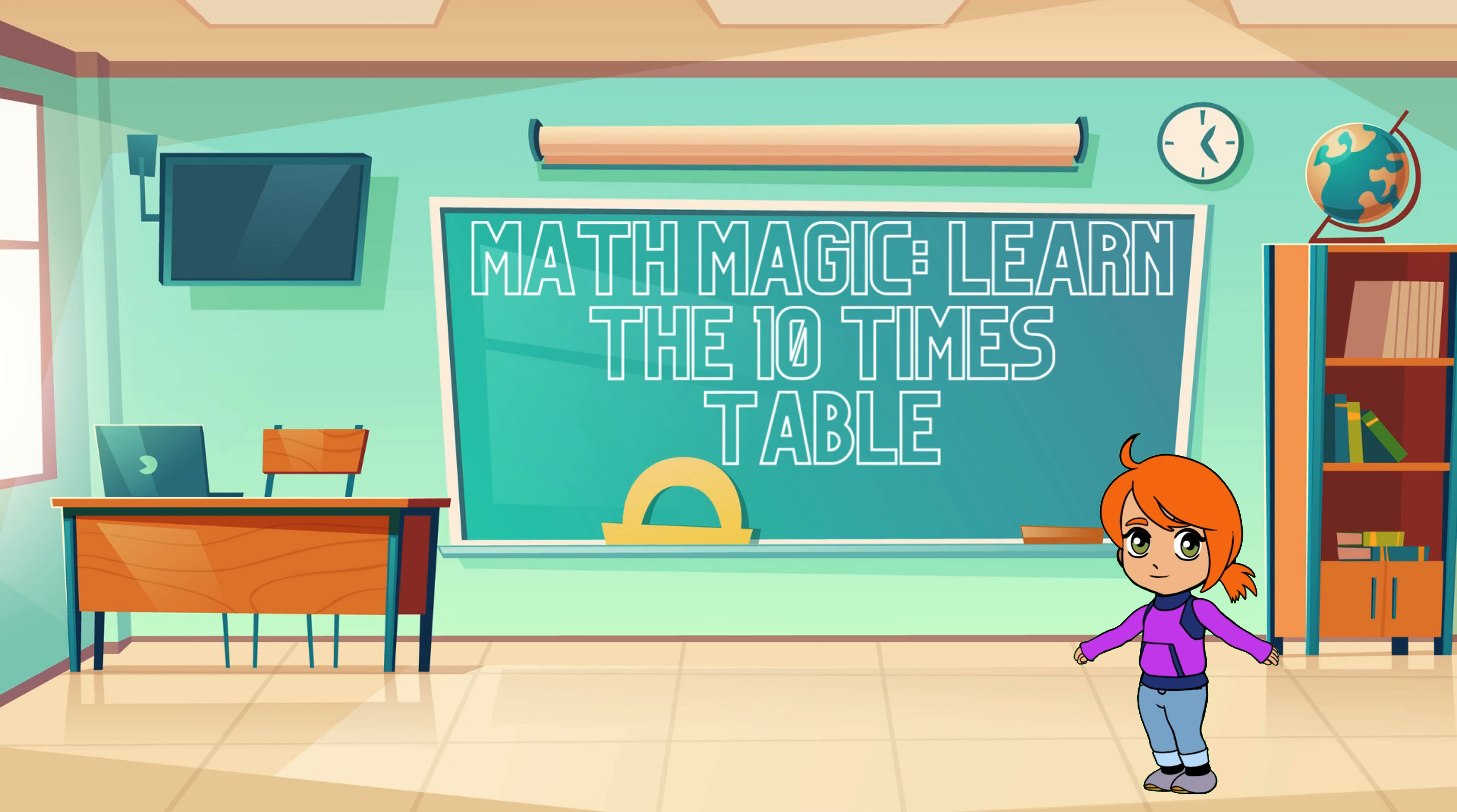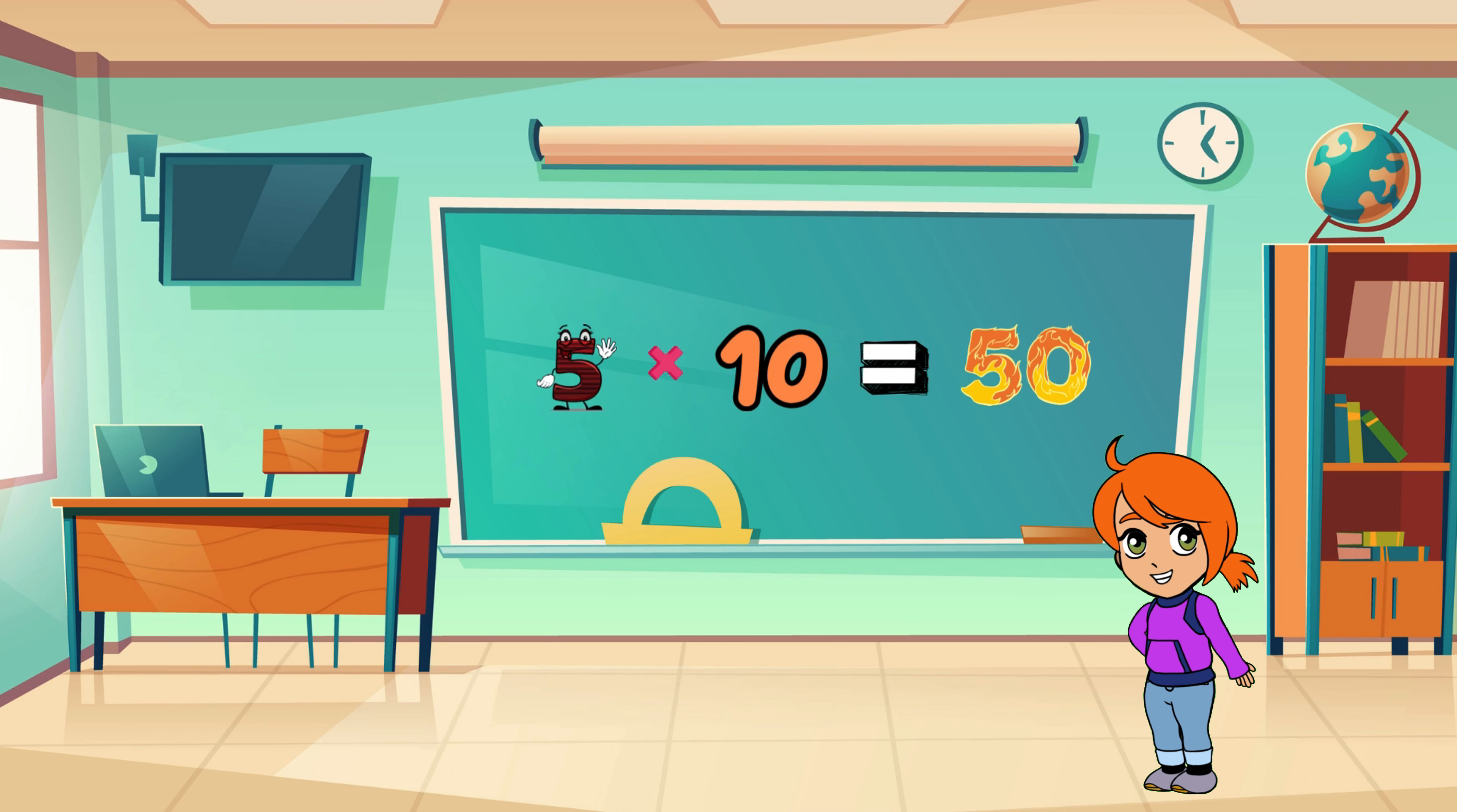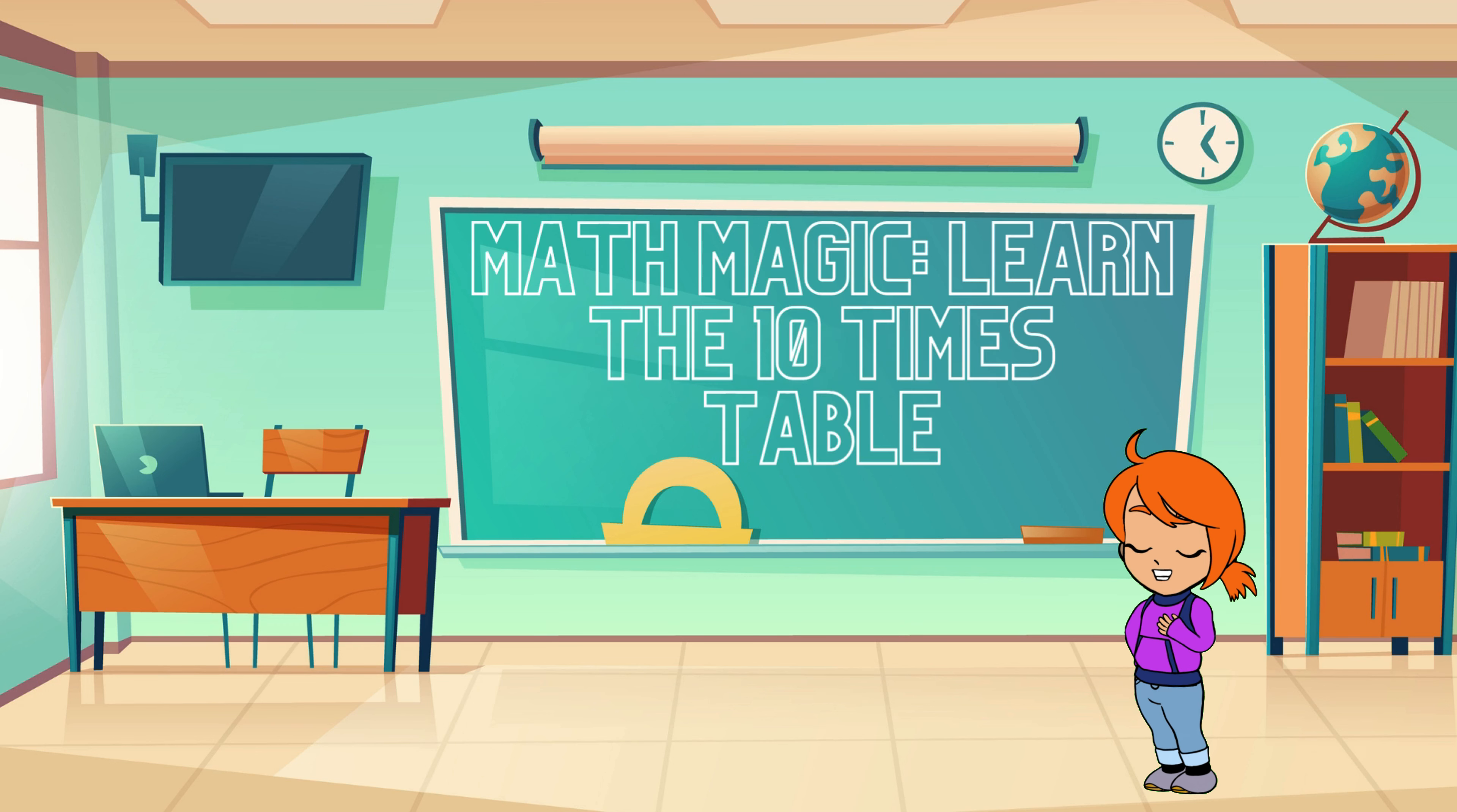Now let's take a quick look at the whole 10 times table. 1 times 10 equals 10, 2 times 10 equals 20, 3 times 10 equals 30, 4 times 10 equals 40, 5 times 10 equals 50, 6 times 10 equals 60, 7 times 10 equals 70, 8 times 10 equals 80, 9 times 10 equals 90, 10 times 10 equals 100.